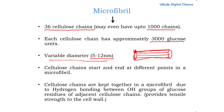The cellulose chains are held together in a microfibril due to hydrogen bonding between the hydroxyl groups of glucose residues of adjacent cellulose chains. One hydroxyl group of one chain may bond with a free hydroxyl group of an adjacent chain in a hydrogen bonding manner. This hydrogen bonding between adjacent chains provides tensile strength to the cell wall.